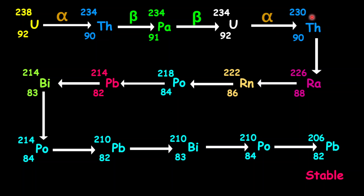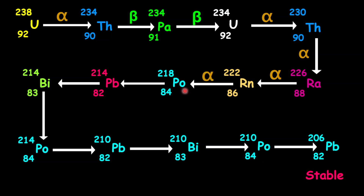Coming from thorium into radium, mass number decreased by 4 — surely alpha. From radium into radon-222, mass number decreased by 4 — surely alpha. From radon into polonium-218, mass number decreased by 4 — surely alpha. Coming from polonium into lead-214, mass number decreased by 4 — surely alpha.